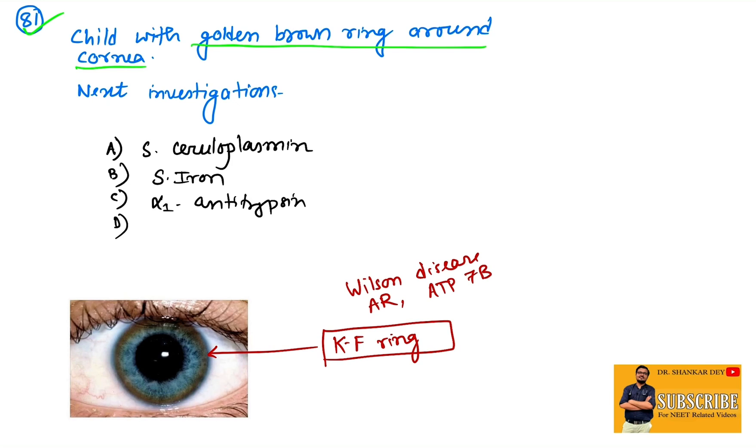Hepatolenticular degeneration occurs. What are the tests in Wilson disease? Usually serum ceruloplasmin level is low, urinary copper excretion is high, and another test that can be done is estimation of free copper in the liver after liver biopsy. Treatment includes zinc, D-penicillamine, etc. So this is a typical presentation of Wilson disease: a child with golden brown ring around cornea, that is KF ring. So the next investigation to diagnose this case, the best investigation, should be serum ceruloplasmin level, which will decrease in this case.